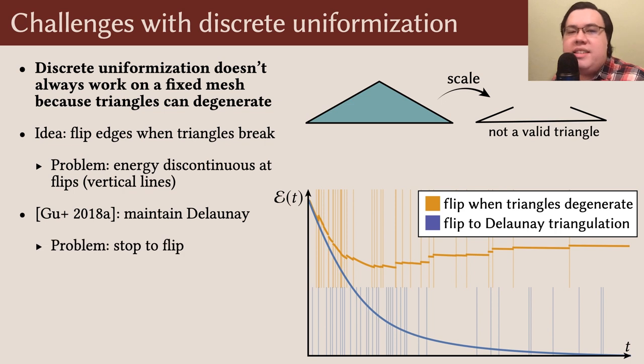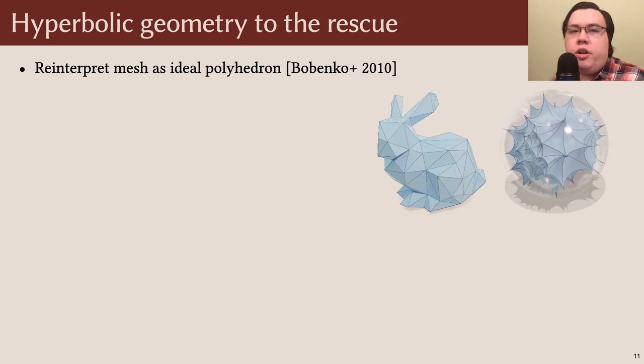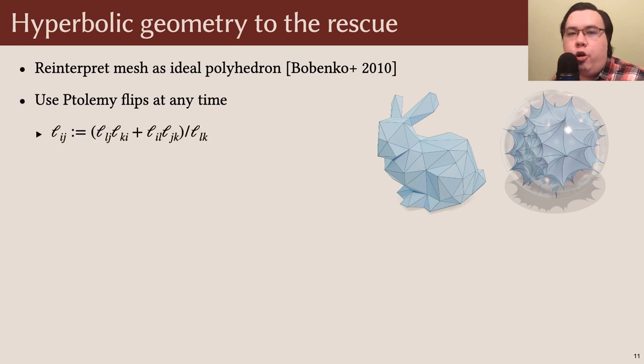However, this requires computing the exact time when the Delaunay condition is violated and pausing there to perform the necessary edge flips. We instead pursue an alternative strategy enabled by hyperbolic geometry. The main idea, proposed by Bobanko and colleagues in 2010, is to reinterpret our triangle mesh as an ideal hyperbolic polyhedron. Then whenever we want to perform an edge flip, instead of using the ordinary Euclidean formula, we compute the length of the flipped edge using this Ptolemy formula instead.